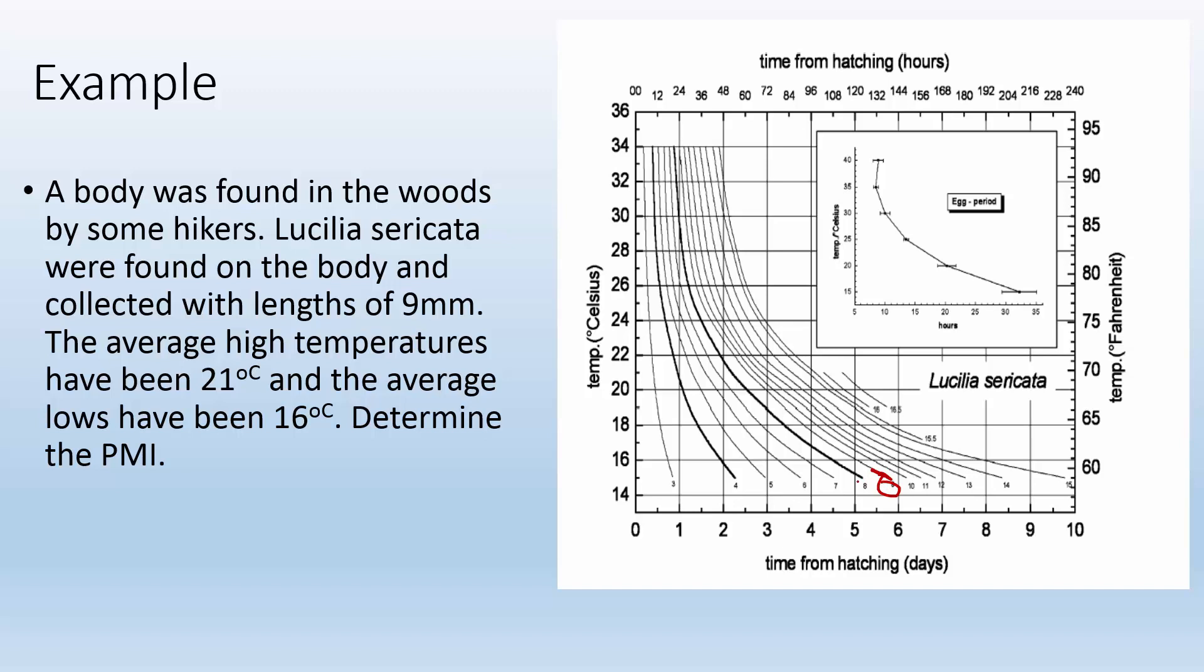The average high temperatures have been 21 Celsius, which I look right here. That's this temperature right here. And the average lows have been 16 degrees Celsius, which is right here. So which temperature do I use? What do I do?